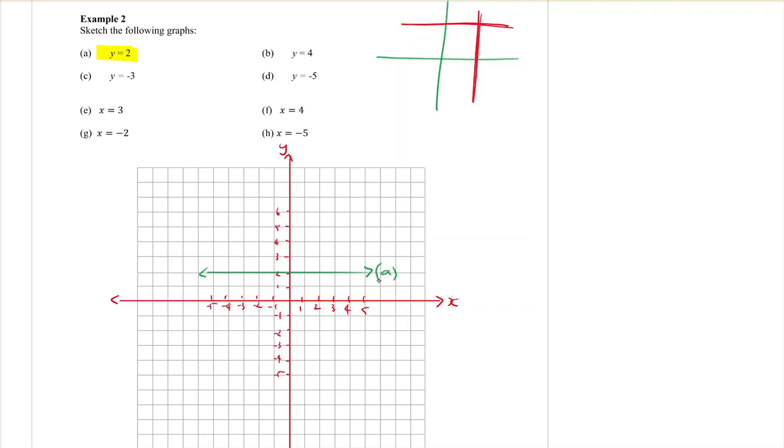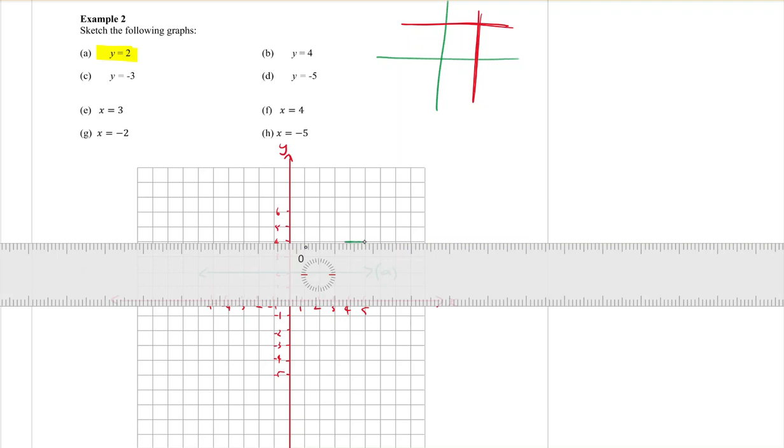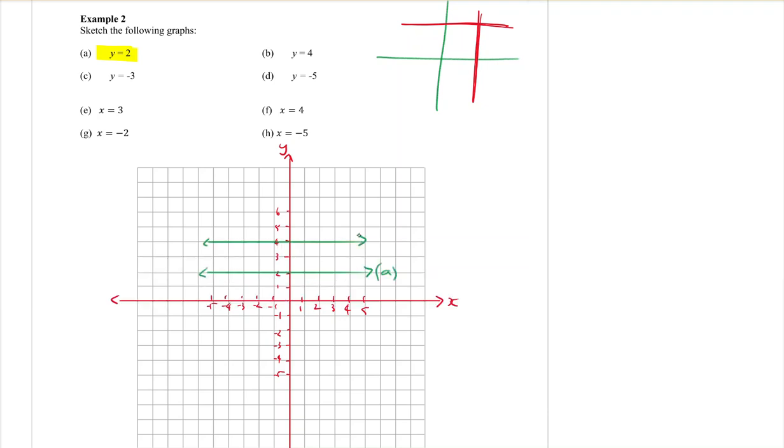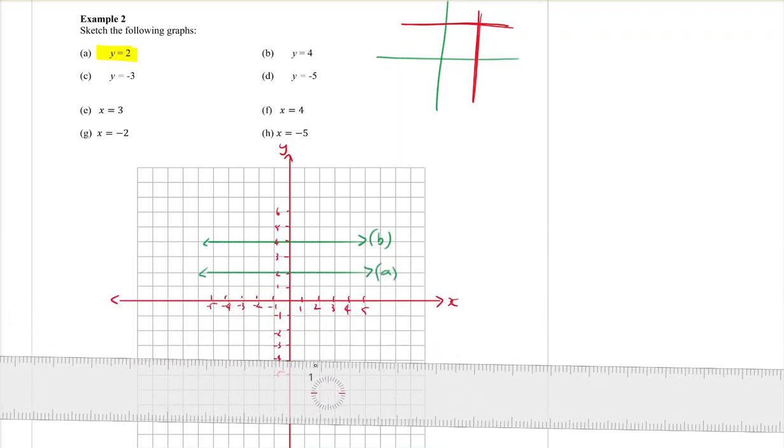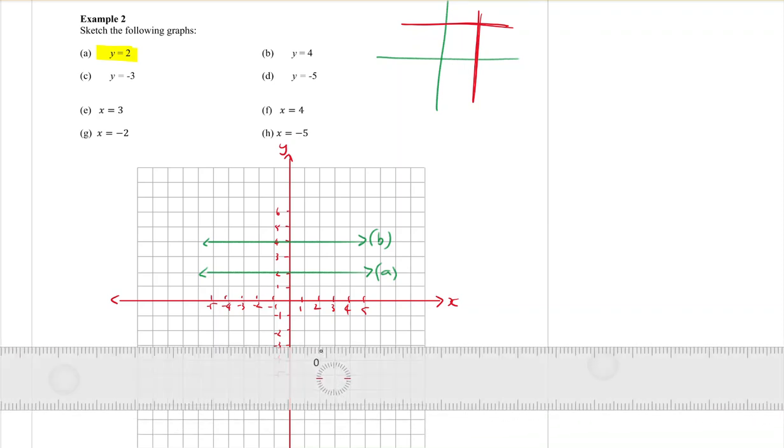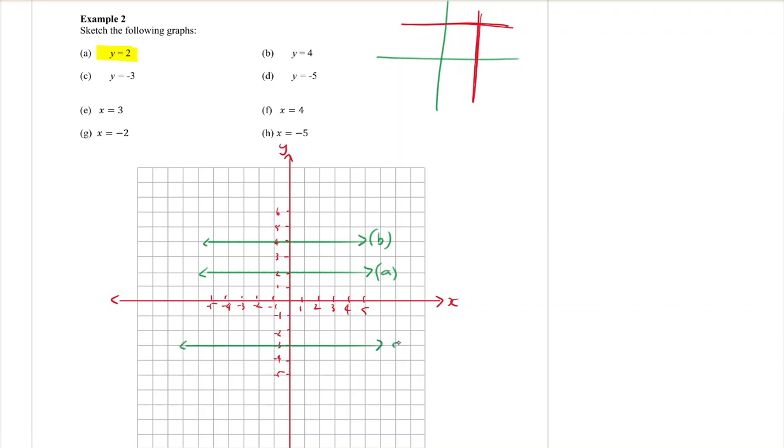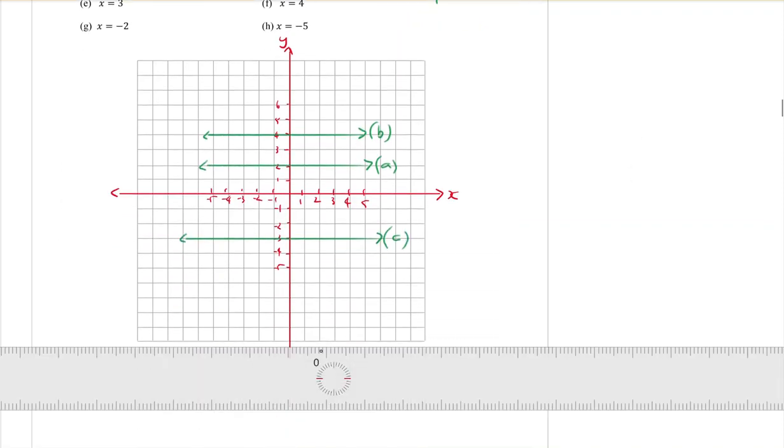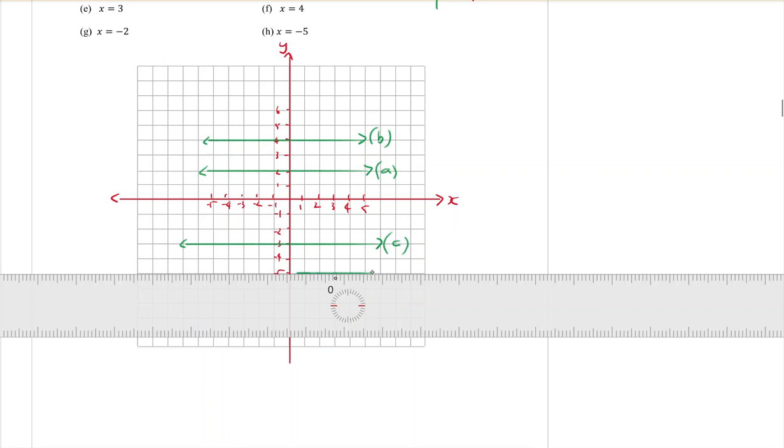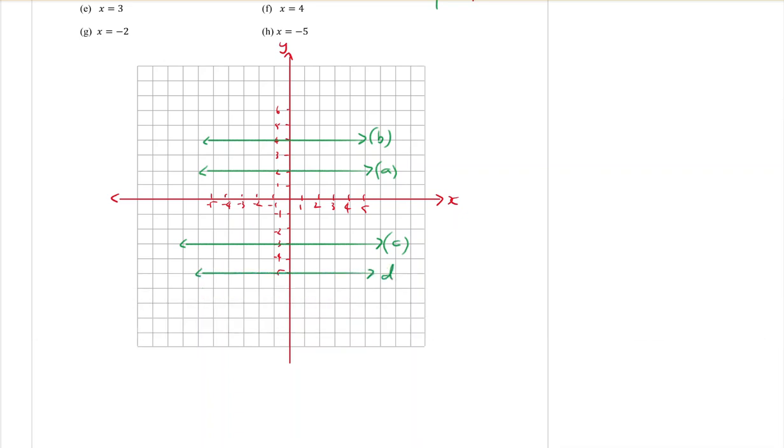I'm not going to write the full equation on here. I'm going to call that one A. B is y equals 4. So we go to the y axis again, and this time we're going through the 4. C is y equals minus 3, which means we're now going down. We're still y equals, but we're in the negative numbers. And the last one was y equals negative 5. So y axis down to the negative 5. So because those ones were all y equals, that's why they were all horizontal ones.